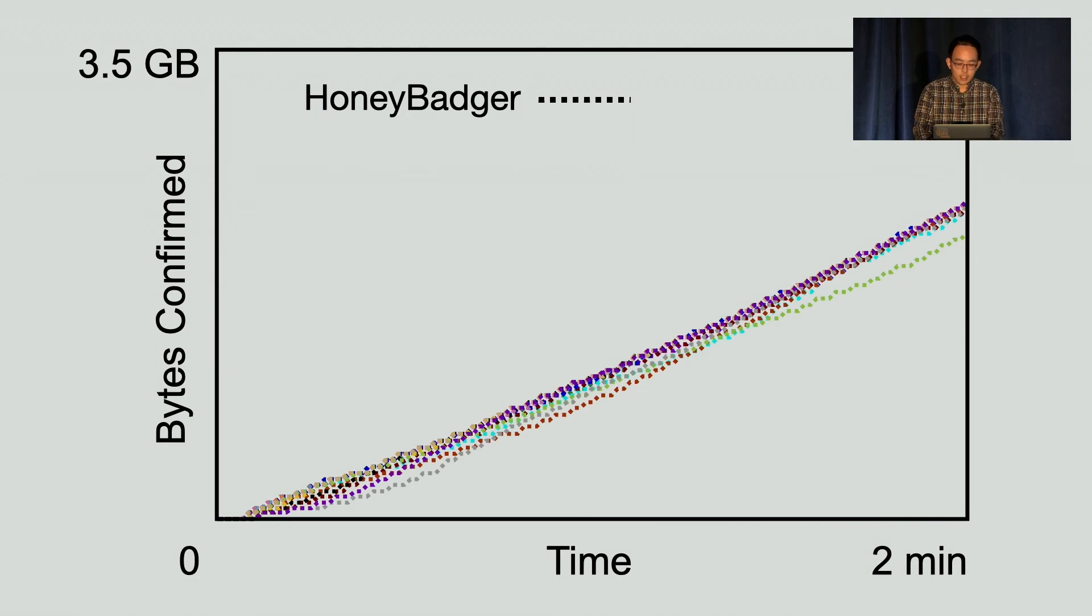First, let's see some traces of Honey Badger and Dispersed Ledger. The x-axis is time, and the y-axis is the amount of data a node has appended to its local copy of the log. It's basically the progress of a node. Each curve represents one node, and we have 16 nodes in different cities. The dotted curves are for Honey Badger. We can see that the curves are very close to each other. This is because in every epoch, all nodes have to wait for the slowest nodes to finish downloading. So they finish an epoch almost synchronously.